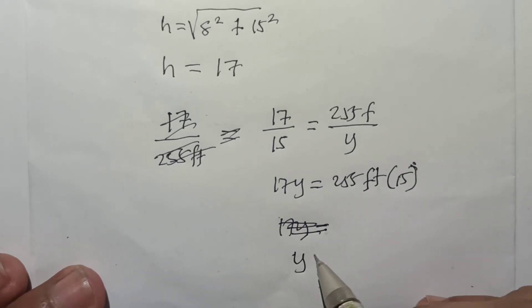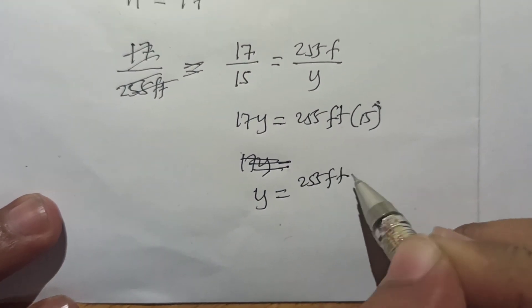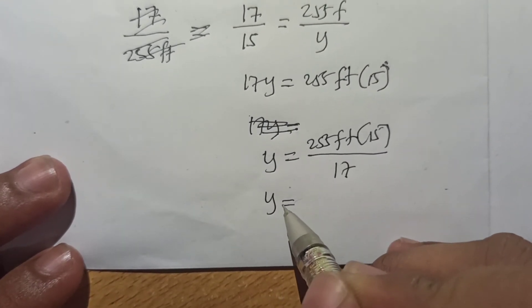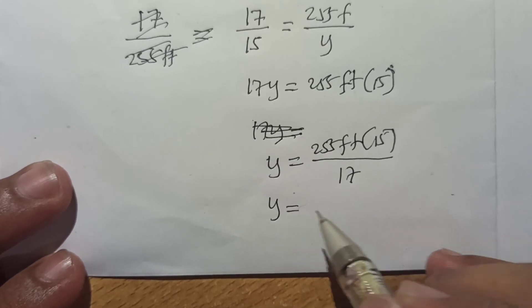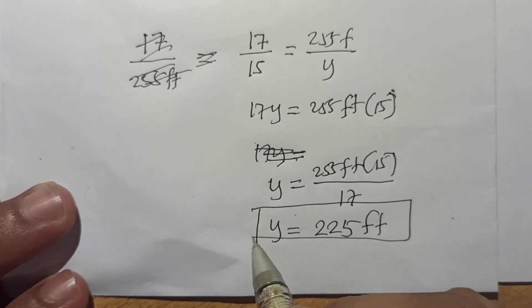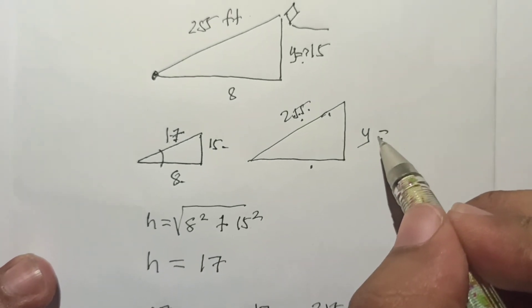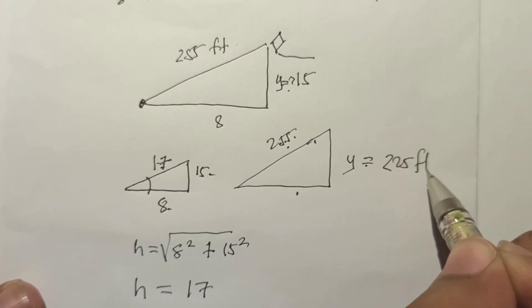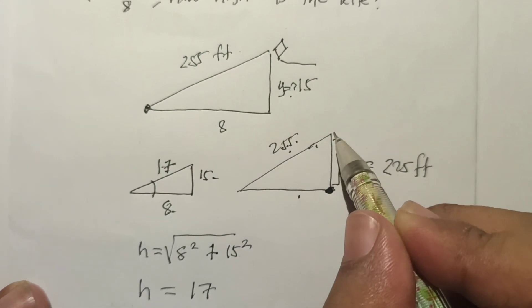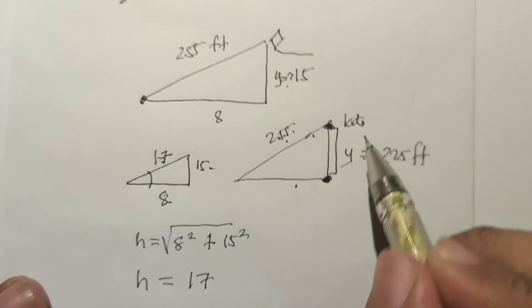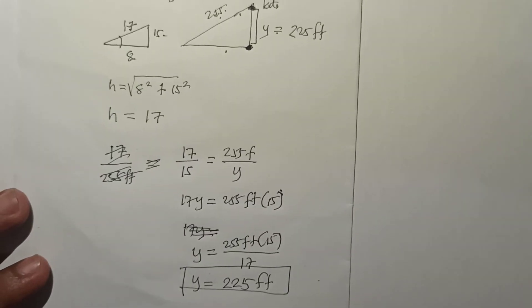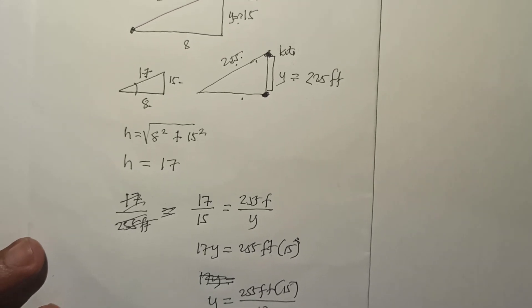We need the ratio 17 to 255 with 15 to y in order to solve for the height. So the proportion is 17 over 255 equals 15 over y. Therefore 17y equals 255 times 15. So y equals 255 feet times 15 divided by 17. Calculating this, y equals 225 feet. That is the height of the kite from the ground.